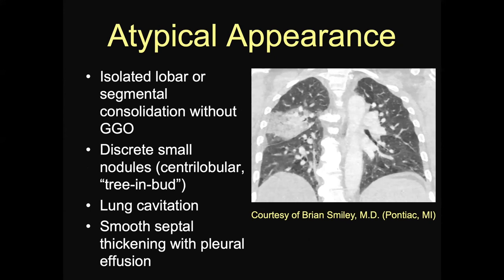Our third category was atypical — things that really don't fit with what's been published in the literature, though it doesn't exclude the diagnosis. Things to think about include isolated lobar or segmental consolidation without ground glass opacity, small nodules like tree-in-bud or centrilobular nodules suggesting a bronchiolitis (which has not been described as a manifestation of COVID-19), cavities, and septal thickening with effusion suggesting edema. In this shared case, there's a large area of consolidation in the right upper lobe as the only abnormality — any other day, you'd say this is typical community-acquired bacterial pneumonia.